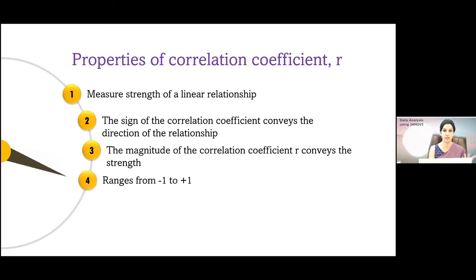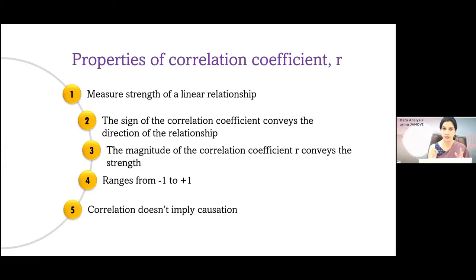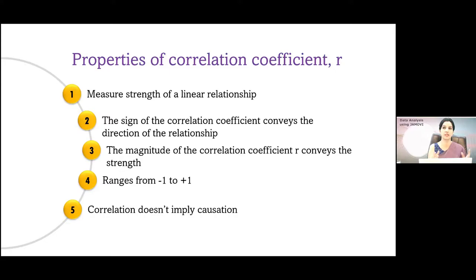The correlation coefficient ranges from minus 1 to plus 1. However, correlation never implies causation. To say that a variable is causal for another, we need to satisfy Hill's criteria, which has 8 to 12 criteria. Strength of association is only one of those criteria. If two variables are correlated, we can never imply that the relationship is causal in nature.